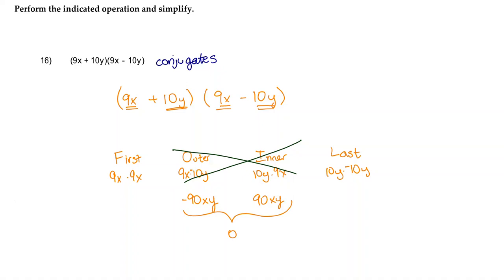So the only thing you really need to do with conjugates is do the first and then put that together with the last terms. So we're going to pay attention to our first two terms, which are 9x and 9x. So 9x times 9x makes 81x squared. And then our last two terms are 10y times negative 10y, which is going to give us negative 100y squared.